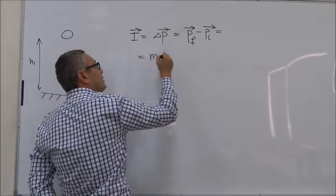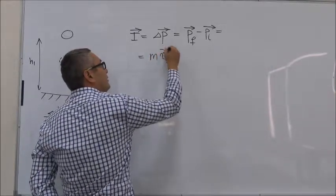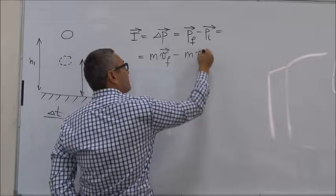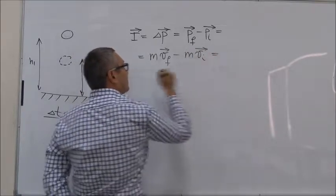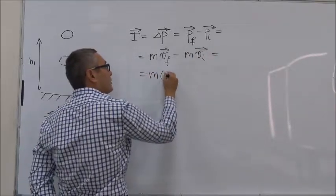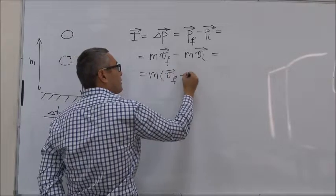Which is equal to mass times V final minus mass times V initial, or we can take mass out of the parenthesis, so V final minus V initial.